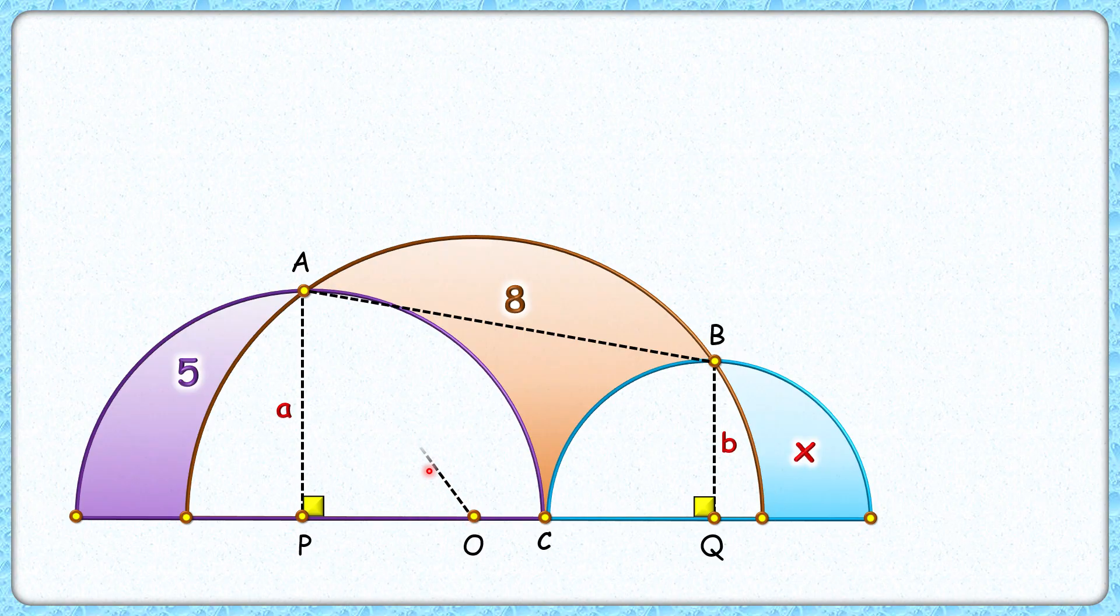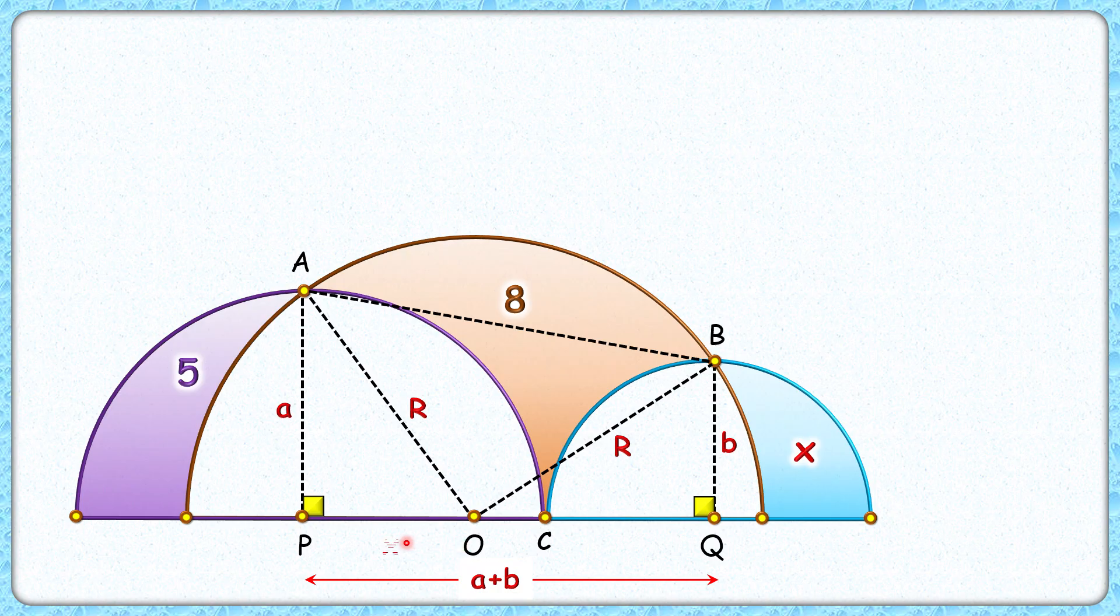O is the center, so OA length is R, and OB length is also R centimeters. Now PC length is radius A, and CQ length is radius B. So PQ length is A plus B centimeters. If we assume PO length as X centimeters, then OQ length will be A plus B minus X.